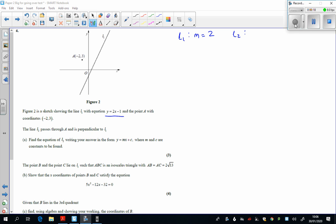Line 2 is perpendicular to it, so line 2, the gradient is minus a half.